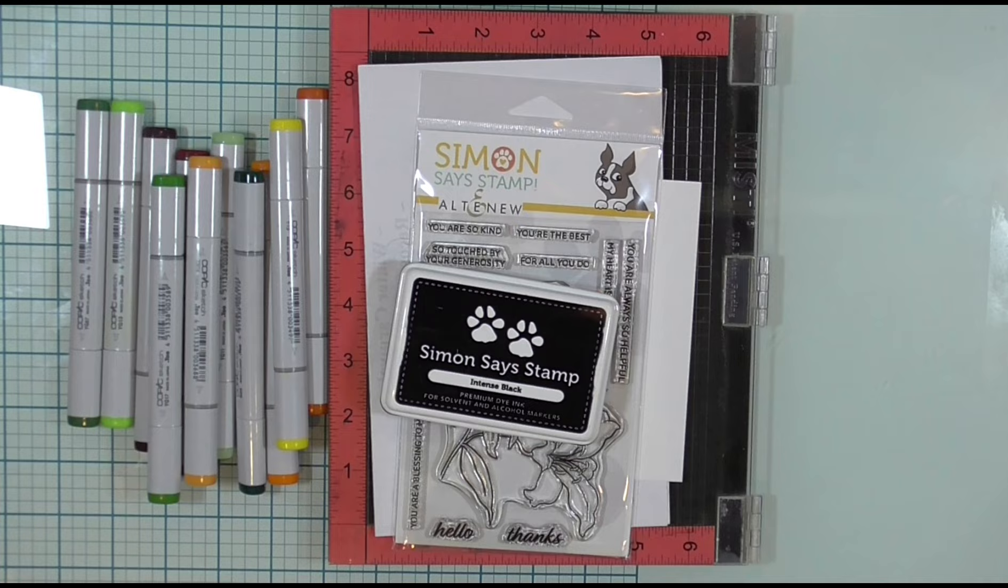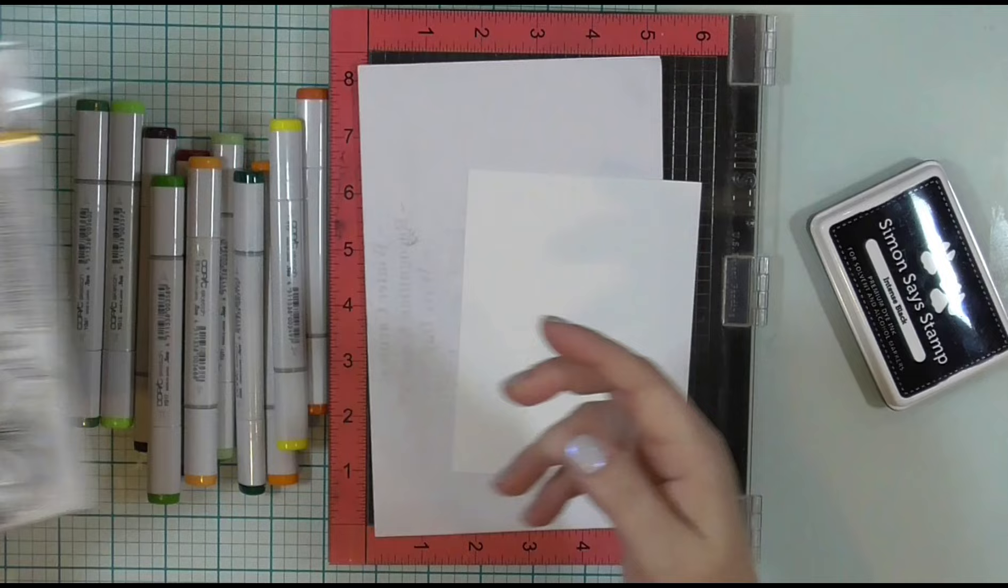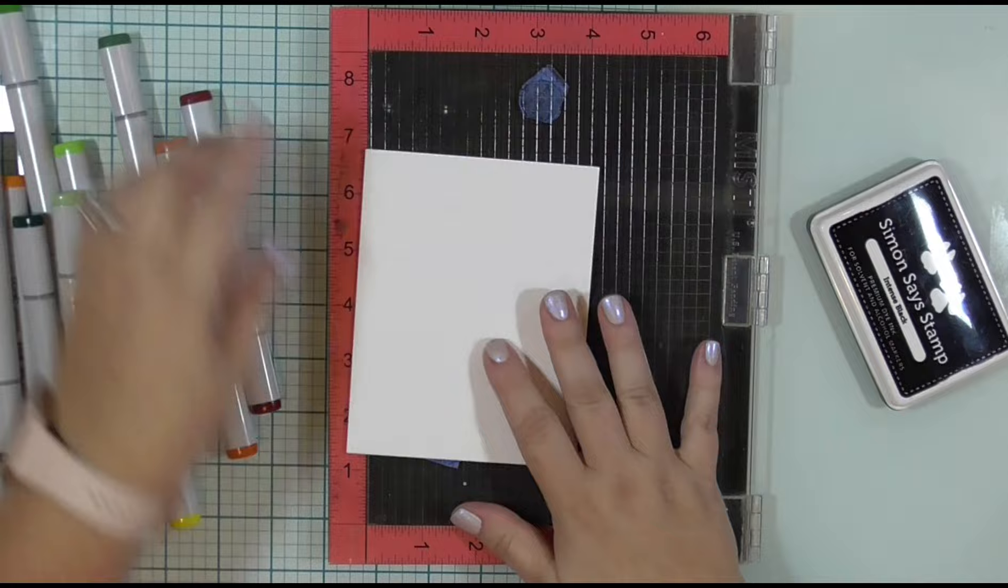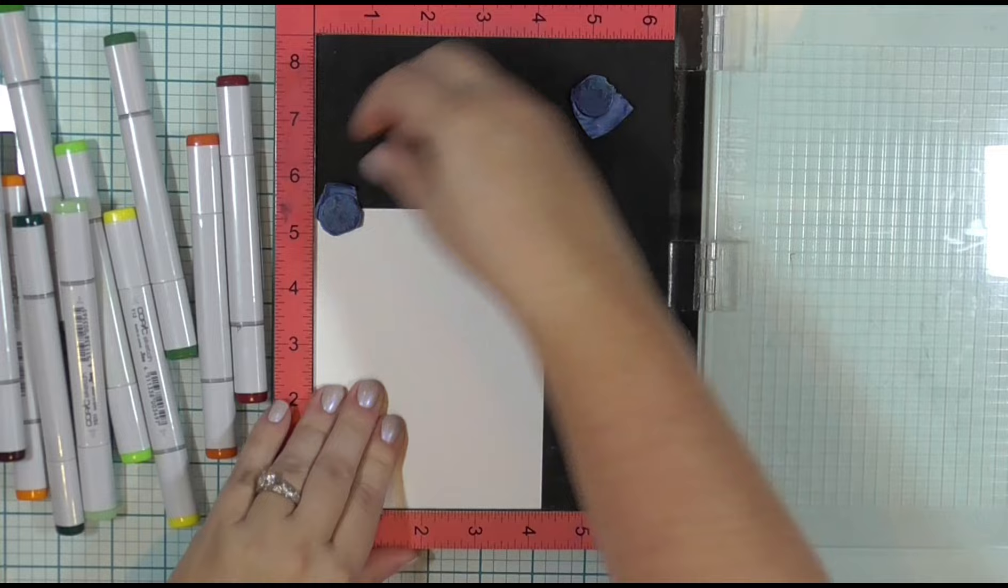Before we get to the crime, let's talk about the coloring. I have selected for this week's coloring, Simon Says Stamp and Altenew collaboration set. This is the collaboration set that was released in September of 2022 for the Simon Says Stamp Stamp Timber.